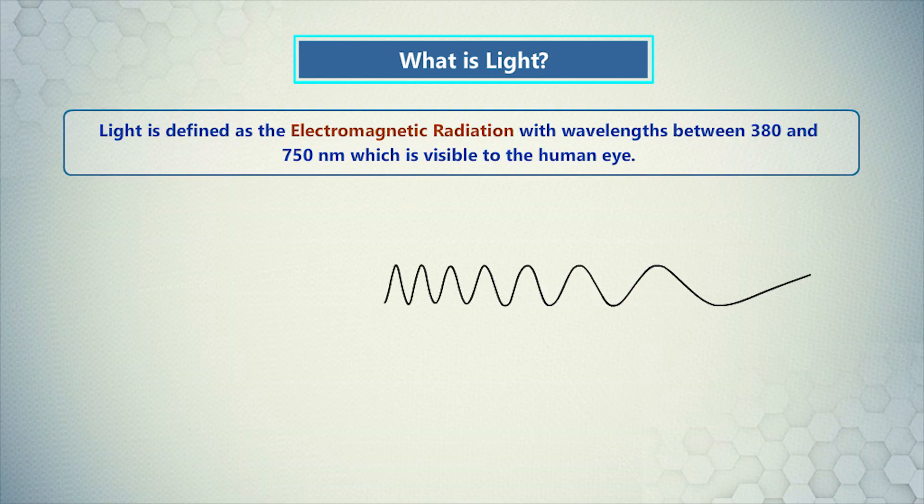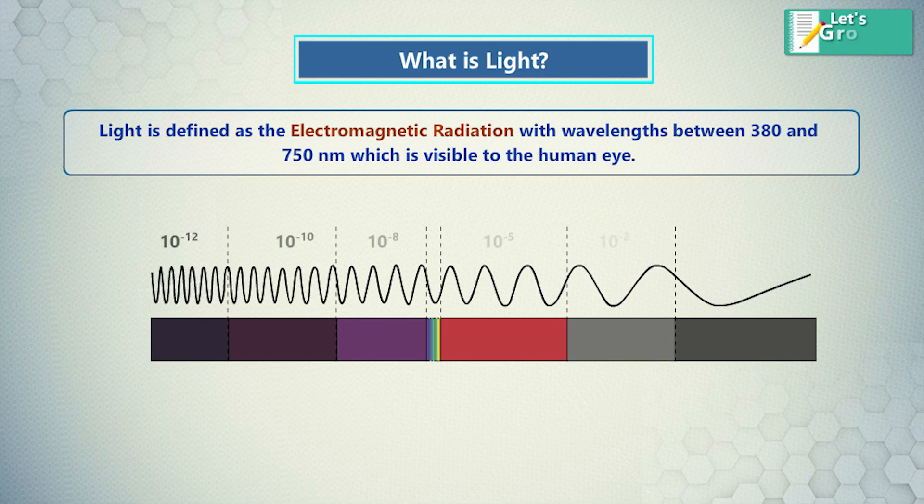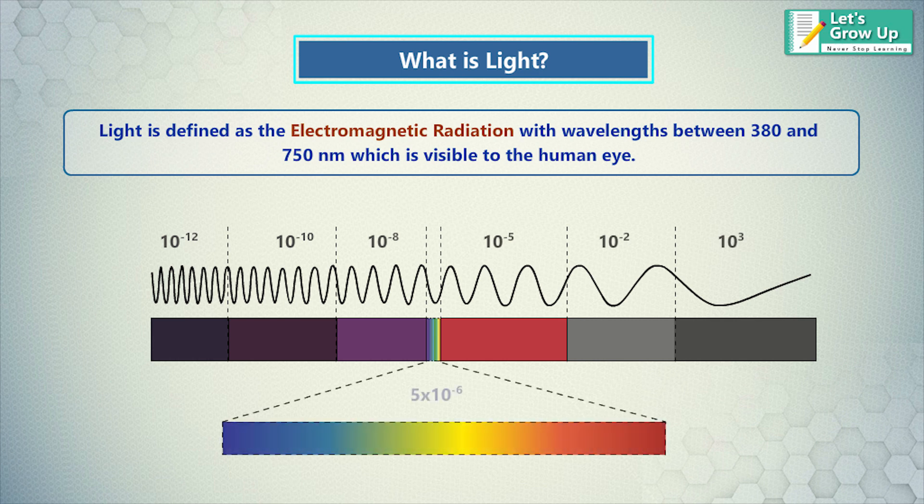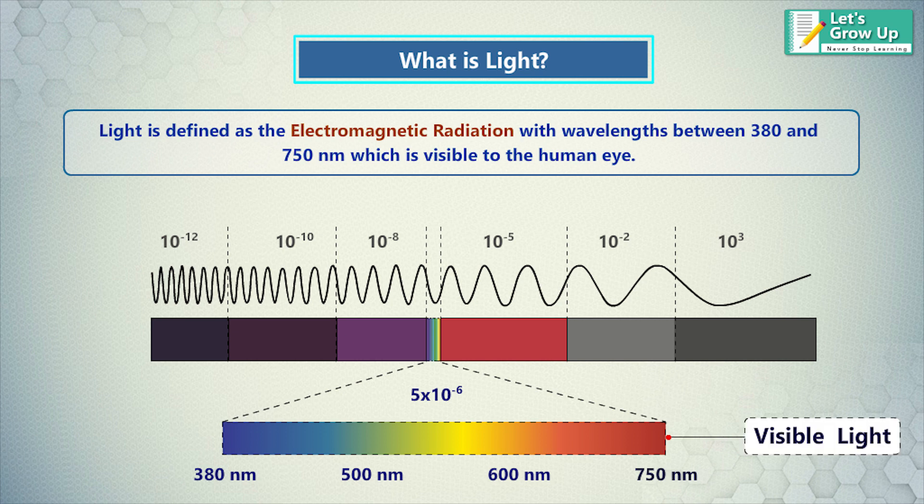What is light? Light is defined as the electromagnetic radiation with wavelengths between 380 to 750 nm, which is visible to the human eye.